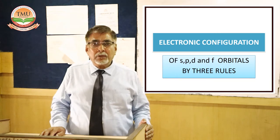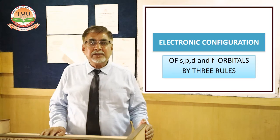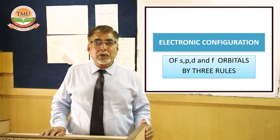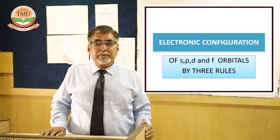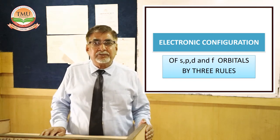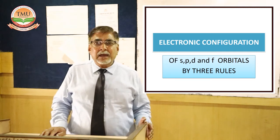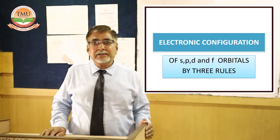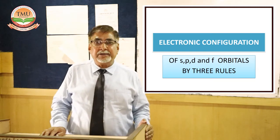All of you know that the periodic table consists of 106 elements, and these elements have been classified as S block, P block, D block, and F block elements. This is very difficult to understand the nature of the elements, so here electronic configuration will help you identify the physical and chemical properties of the elements.